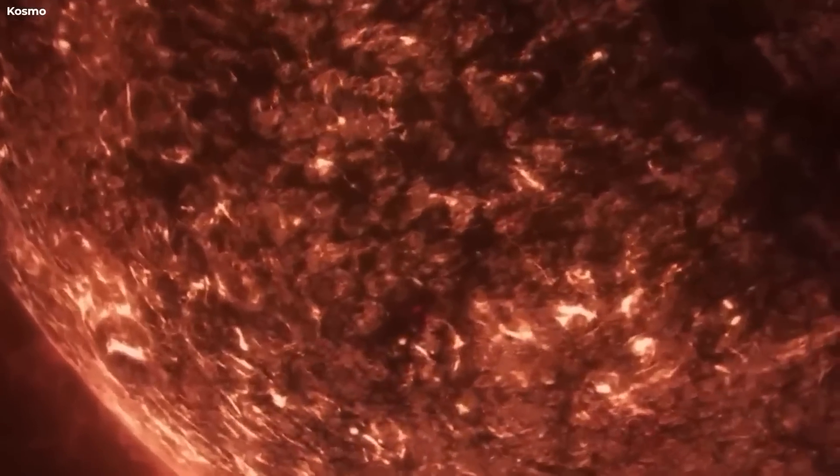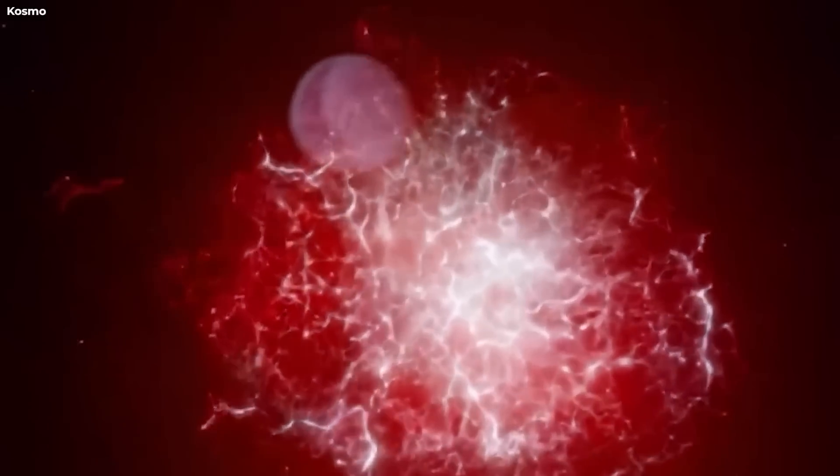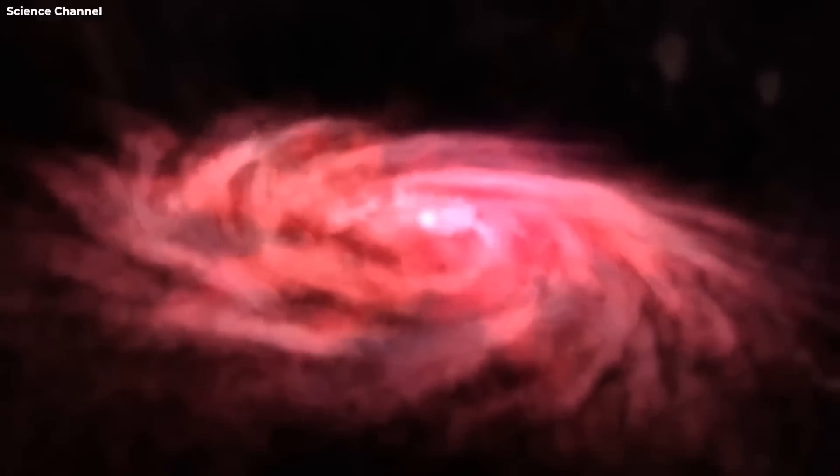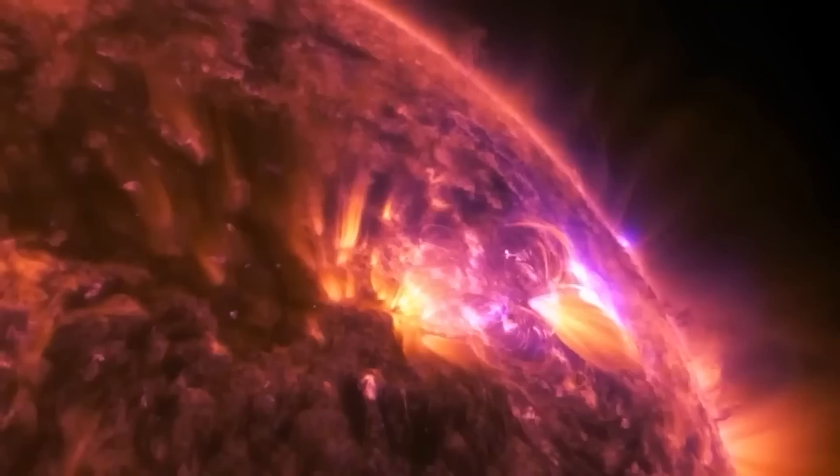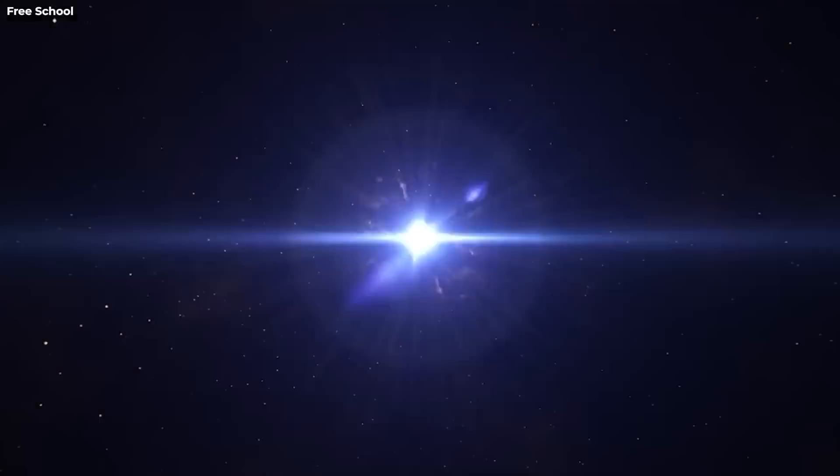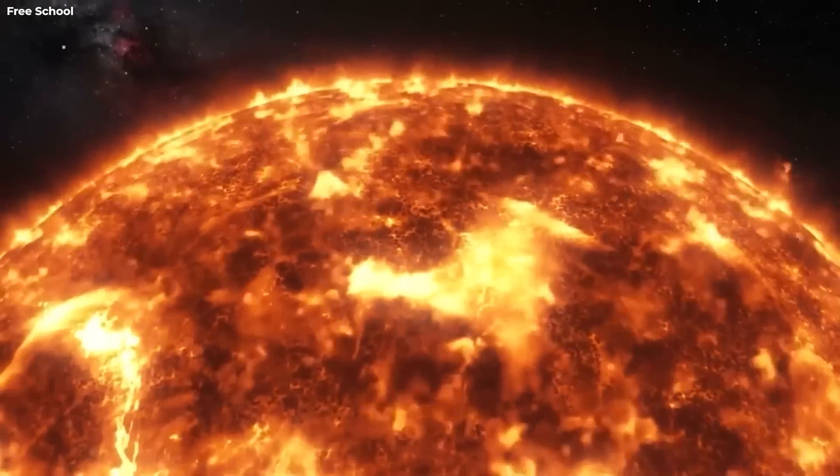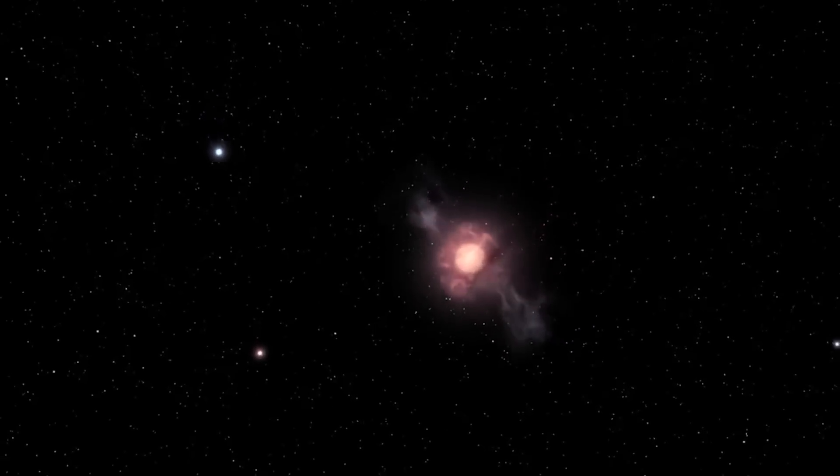Based on its mass, astronomers predict that the supergiant star will go supernova when it reaches approximately 10 million years old. At present, Betelgeuse is estimated to be around that age. During this time, scientists didn't fully understand what was happening to Betelgeuse, although they suspected that something was amiss. What they were certain about, though, was that the star was very old and nearing the end of its life.